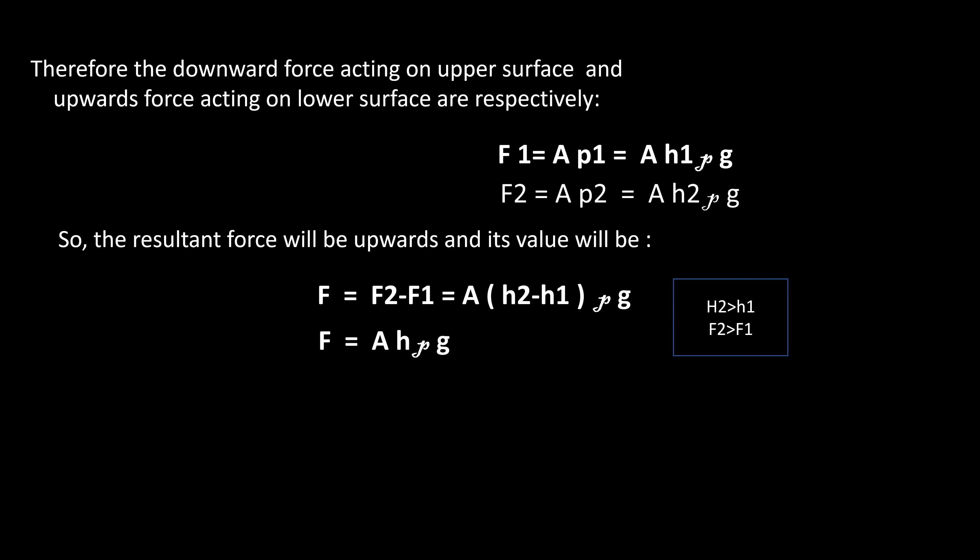Therefore the downward force acting on upper surface and upwards force acting on lower surface are respectively F1 equals to A h1 rho g, F2 equals to A h2 rho g. So the resultant force will be upwards and its value will be F equals to F2 minus F1, because we know h2 better than h1, so F2 better than F1. So we can write F equals to A h rho g.